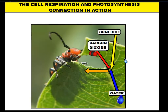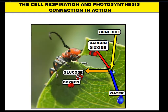Sunlight is going to enter the leaf and hit the chloroplasts in the palisades layer. Carbon dioxide is going to diffuse into the leaf through the stoma in the bottom of the leaf. Water is going to be pulled up from the roots and travel through vascular tissue in special cells called xylem cells. All these materials are brought into the chloroplasts in the leaves. As the chloroplasts carry out photosynthesis, they produce glucose and oxygen — super important for animals here.